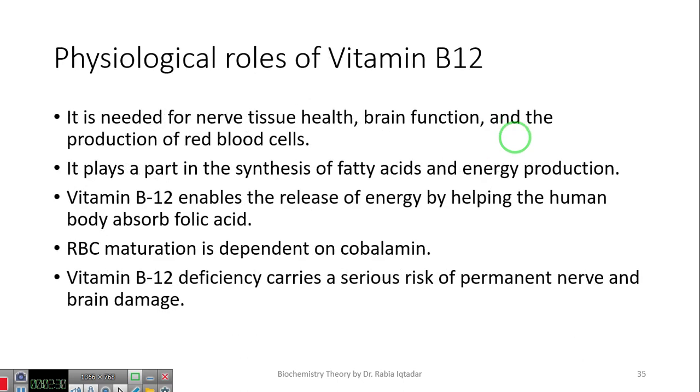So what are the physiological roles of vitamin B12? It is needed for nerve tissue health, brain function, and production of red blood cells. That's why we read before, that megaloblastic anemia can occur due to vitamin B12 deficiency. It plays a part in the synthesis of fatty acids and energy production.